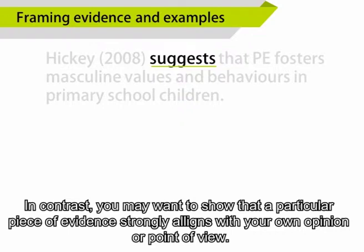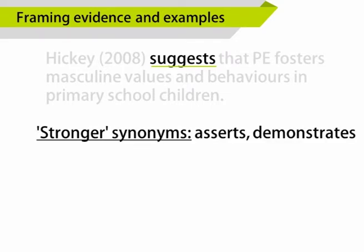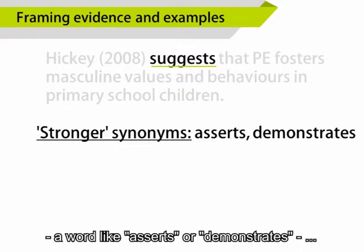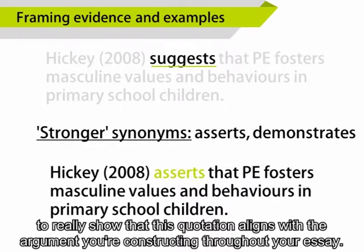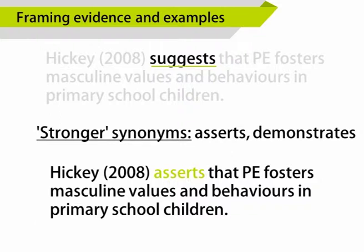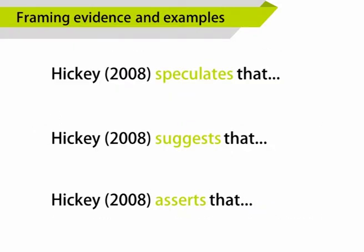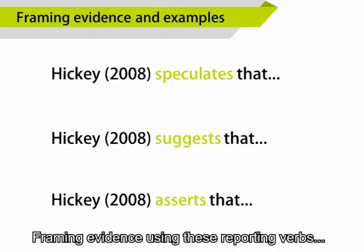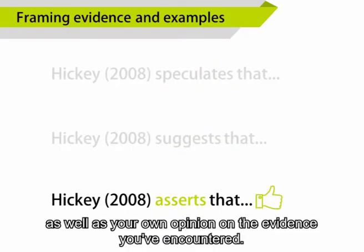In contrast, you may want to show that a particular piece of evidence strongly aligns with your own opinion or point of view. In this case, you might want to use a stronger synonym — a word like 'asserts' or 'demonstrates' — to really show that this quotation aligns with the argument you are constructing throughout your essay. Keep these alternatives in mind next time you construct a paraphrase. Framing evidence using these reporting verbs can really demonstrate your evaluation skills to the reader, as well as your own opinion on the evidence you have encountered.